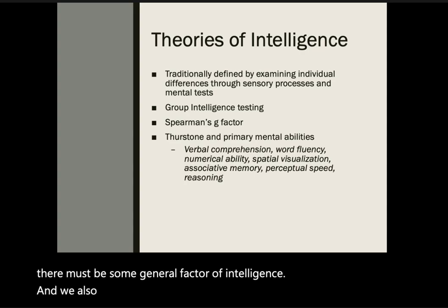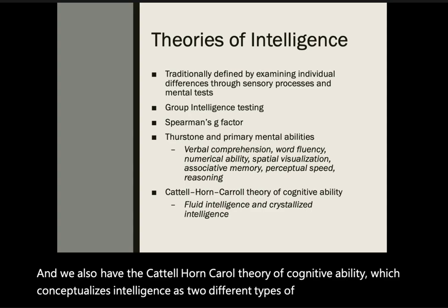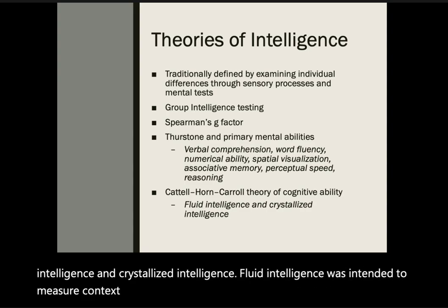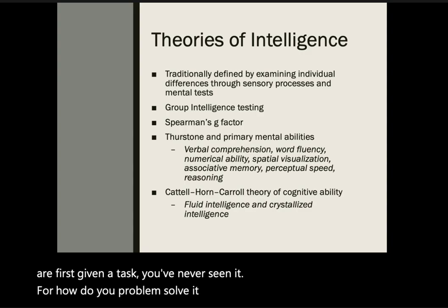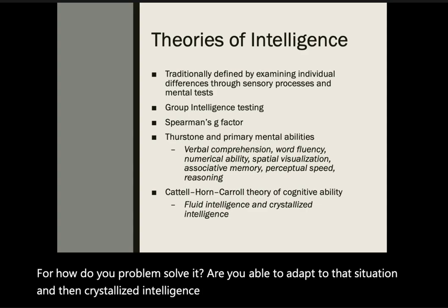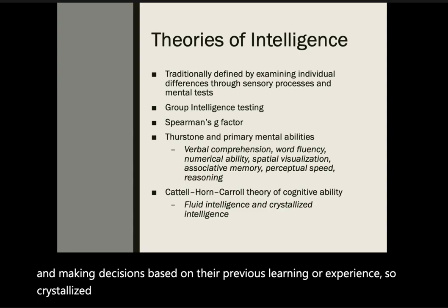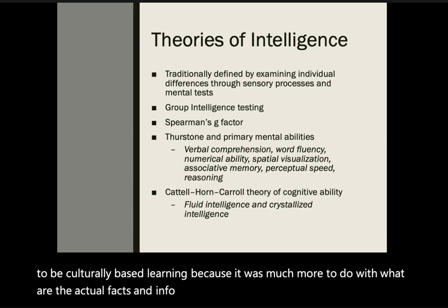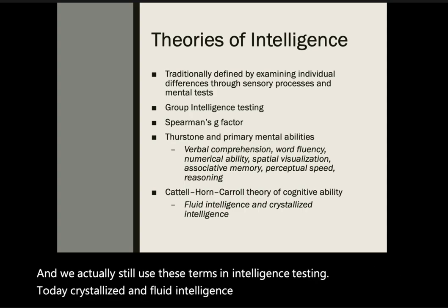We also have the Cattell-Horn-Carroll theory of cognitive ability, which conceptualizes intelligence as two types: fluid intelligence and crystallized intelligence. Fluid intelligence measures context-free capacity for solving new problems — your ability to problem-solve something you've never seen before. Crystallized intelligence involves solving problems based on previous learning or experience, and was considered more culturally based because it relates to facts and information taught in school. We still use these terms in intelligence testing today, though they are conceptualized in somewhat different ways.